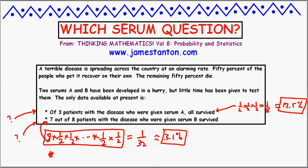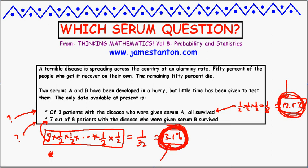So, if A and B are having no effect, the chance of seeing A's results naturally happen is 12.5%, while the chance of seeing B's results naturally happen is only about 3%. It's quite rare to see the effect that serum B produced. It's rarer than what serum A showed. So I'm going to conclude that B is more likely to be having an effect than A, given this data — it's producing an outcome that is rarer to see naturally. Therefore, I'm going to choose B.